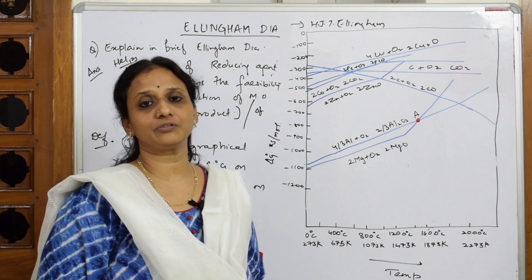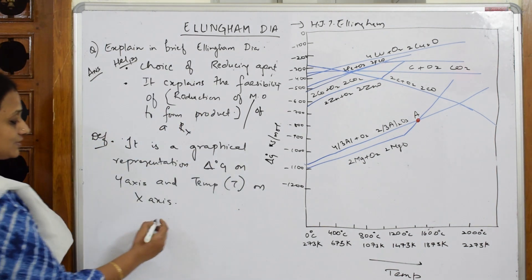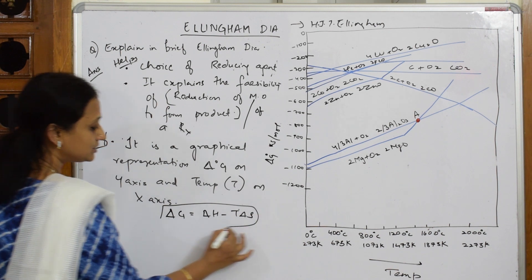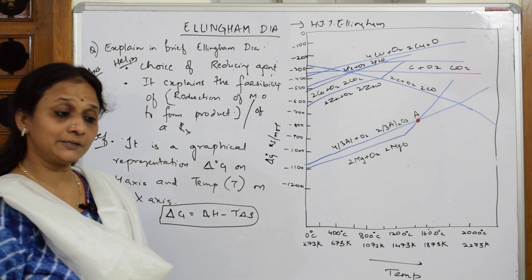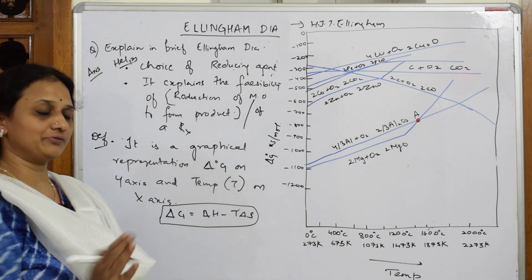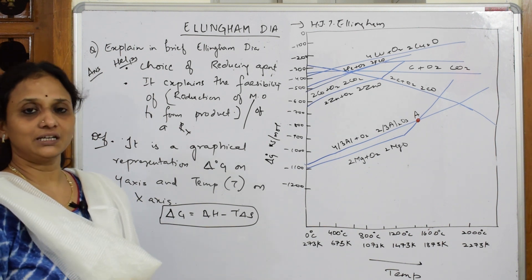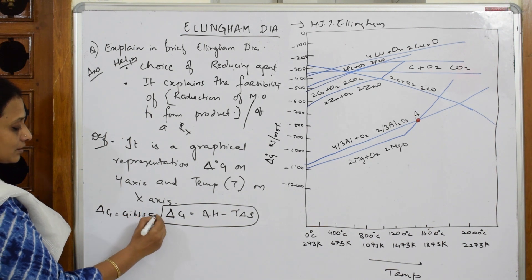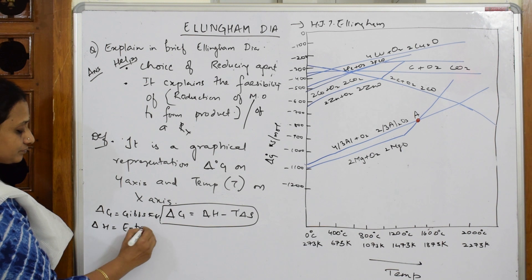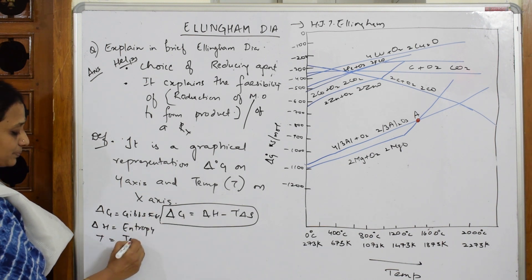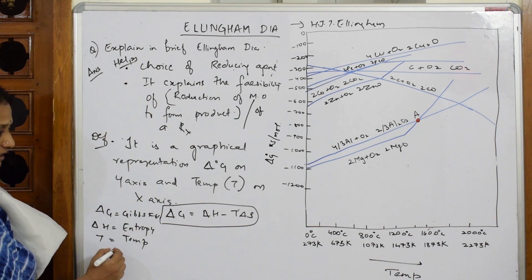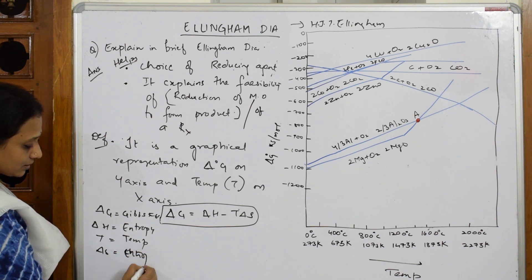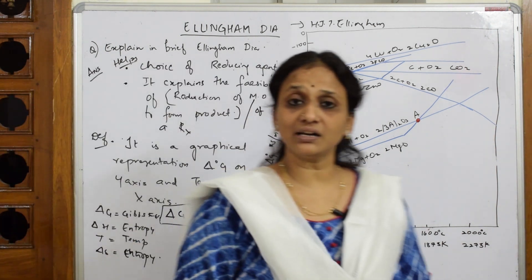We already studied Gibbs free energy in grade 11 — that is why we call this the thermodynamical aspect of metallurgy. From grade 11: ΔG = ΔH − TΔS. If Gibbs free energy is negative, the reaction is compulsorily feasible and will go in the forward direction giving products. Here ΔG is Gibbs free energy, ΔH is enthalpy, T is temperature, and ΔS is change in entropy.